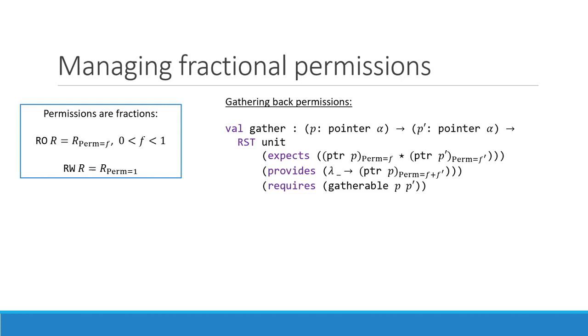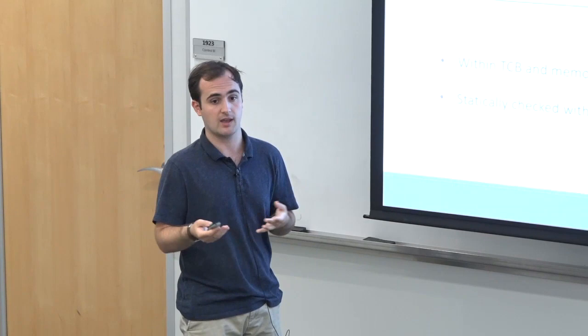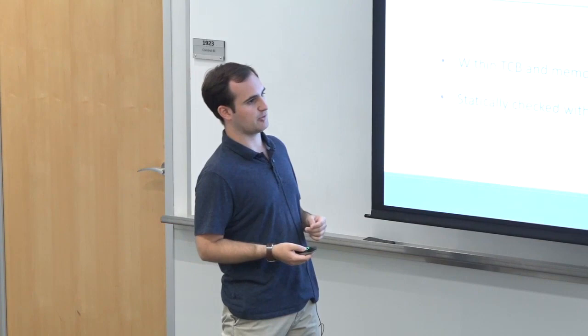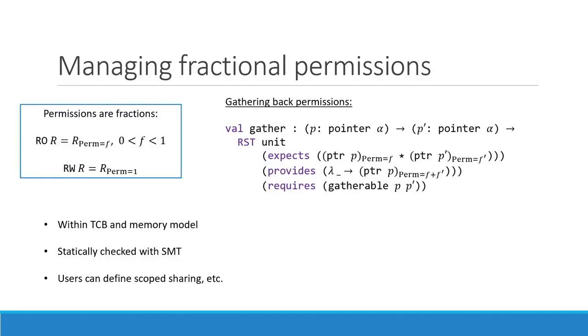Of course, you can only gather pointers that alias the same thing. The nice thing about this extension is that it stays within the trusted computing base and the memory model, because we implement those permissions as ghost values stored inside the heap. All permission manipulation is statically checked, and we have SMT to ease us with this task. If you don't want to use fractional permissions because it's too complicated, and your needs are something simpler like scoped allocation of resources, you can define it as a verified library on top of the existing framework.